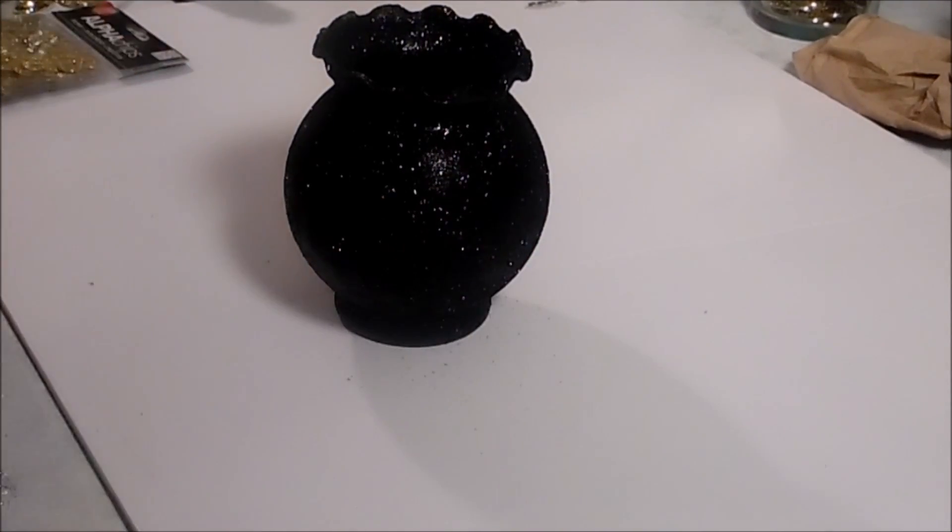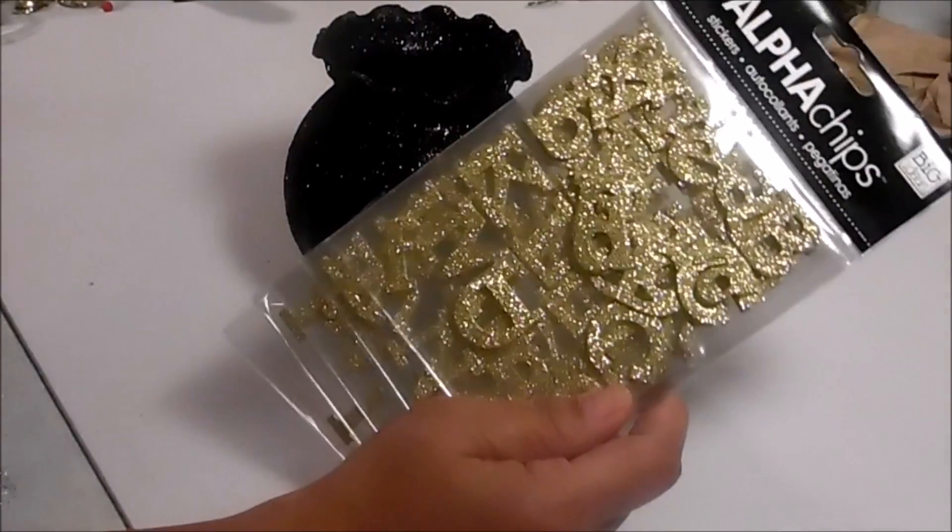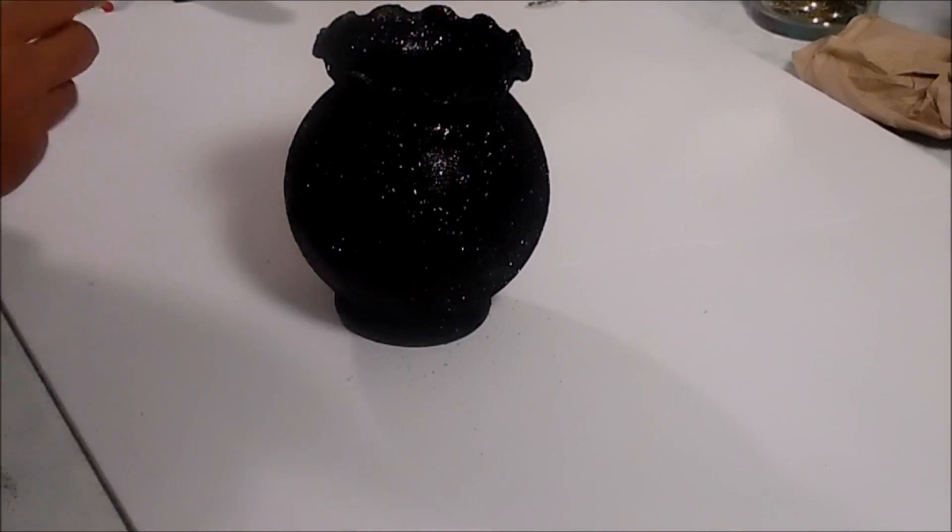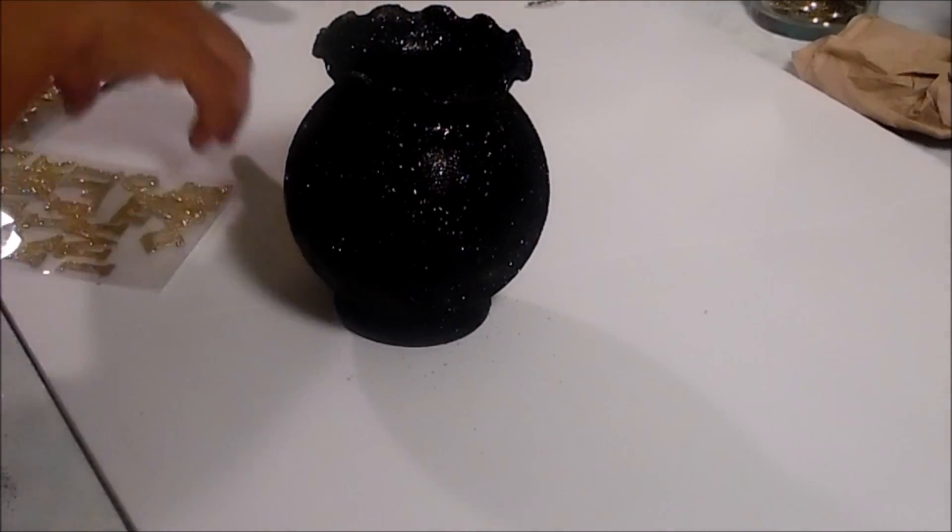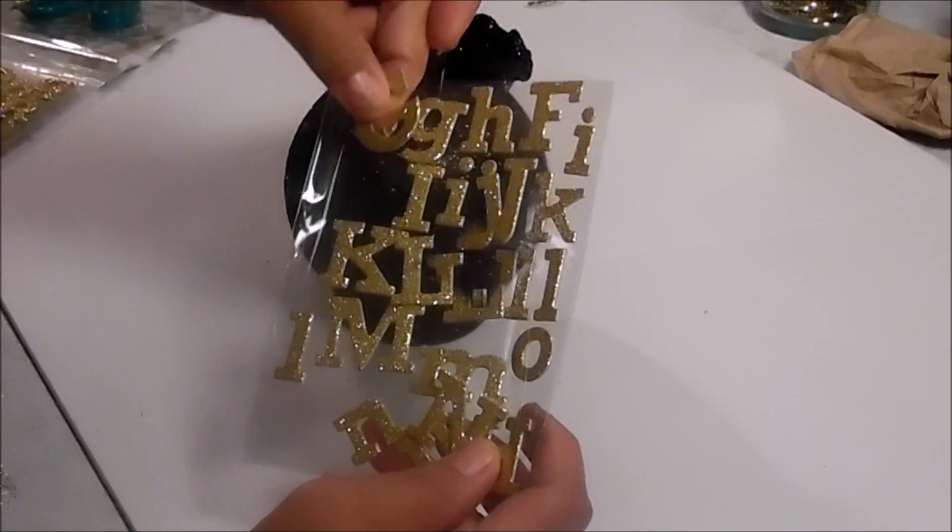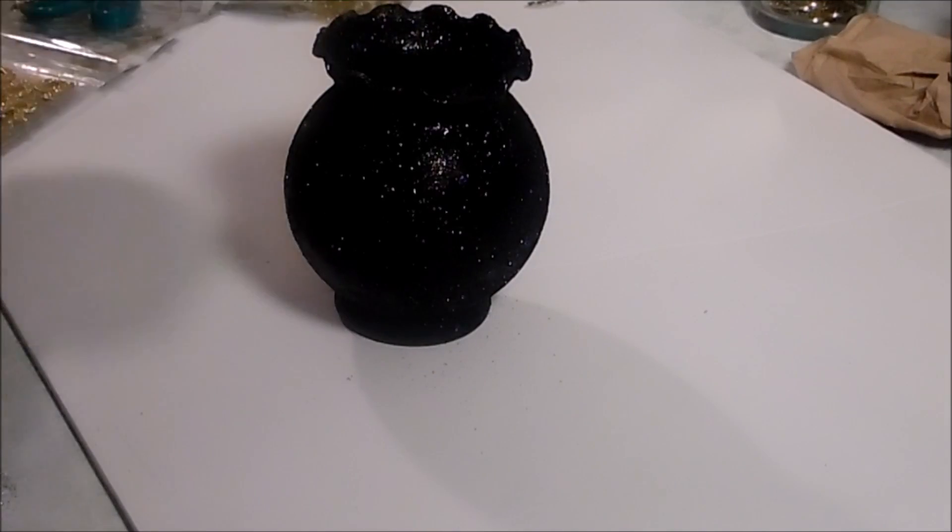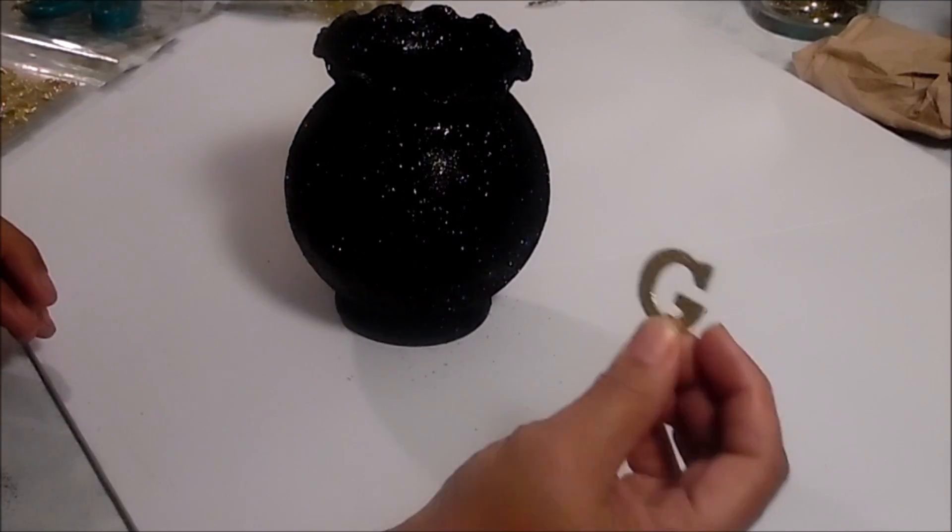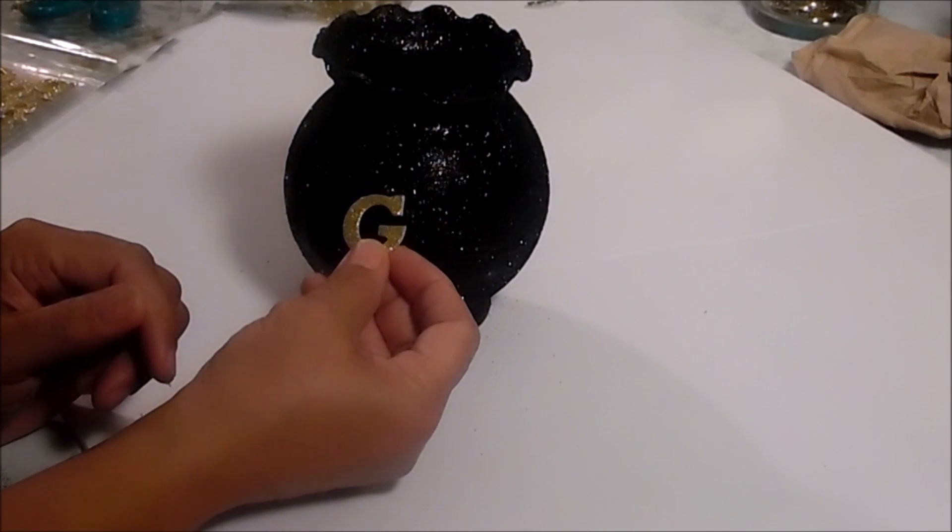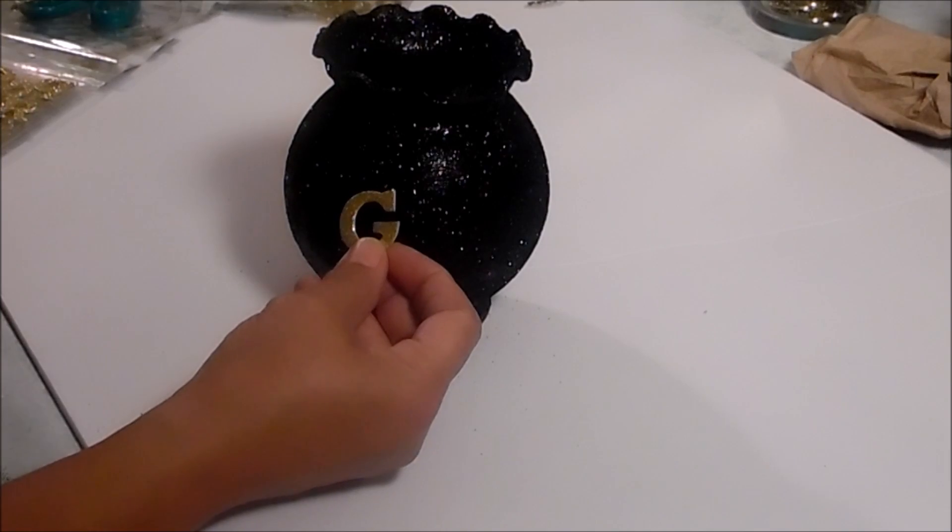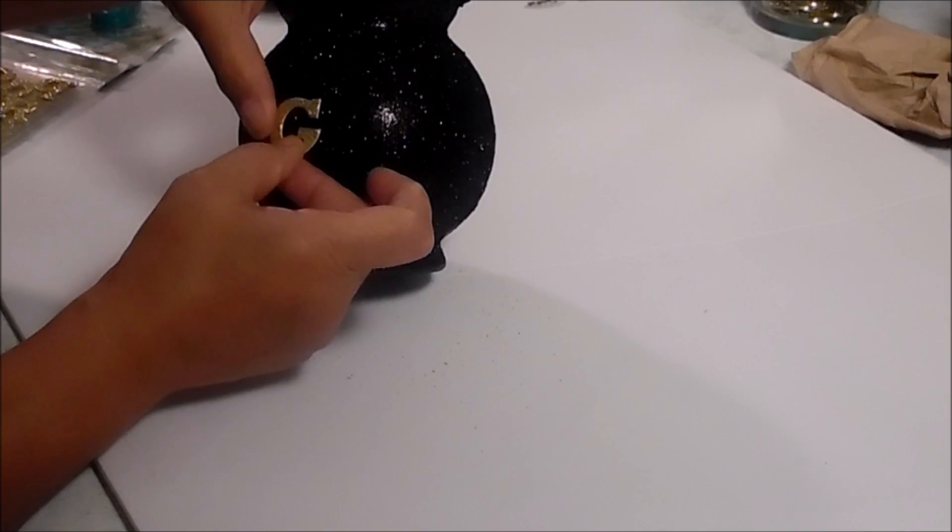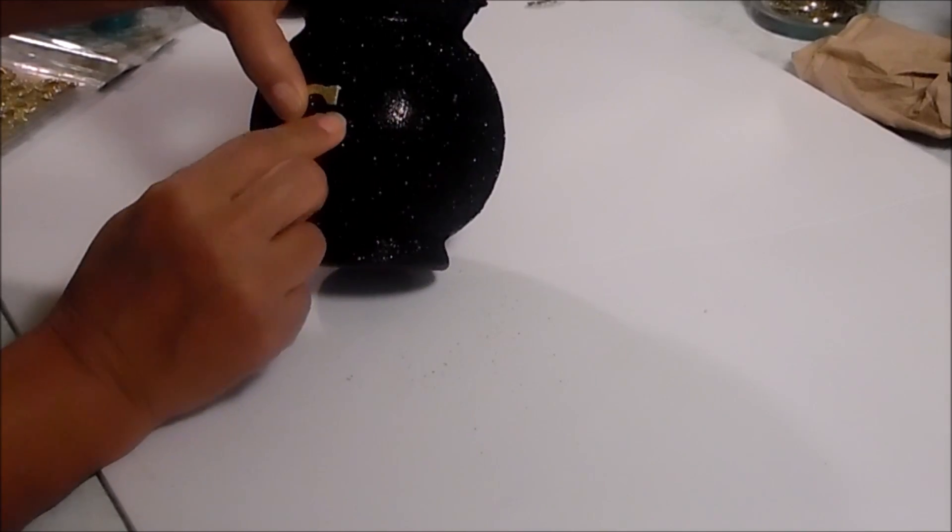But I'm fine with the way it looks right now. So what I'm going to do next is take these little letters that I picked up from Michael's. I'm just going to spell out GOLD. And as you can see, they have the lower and uppercase alphabets. I'm going with the uppercase. And these already have adhesive on the back. So I'm going to see if it sticks to this container. If not, then I'll go ahead and use my glue gun to apply it.